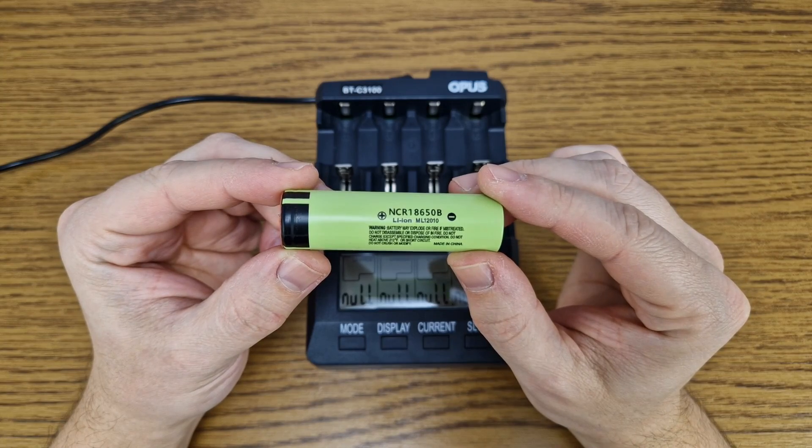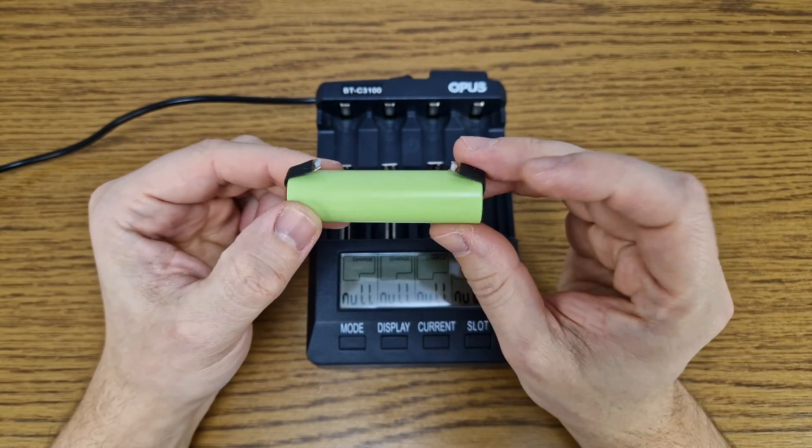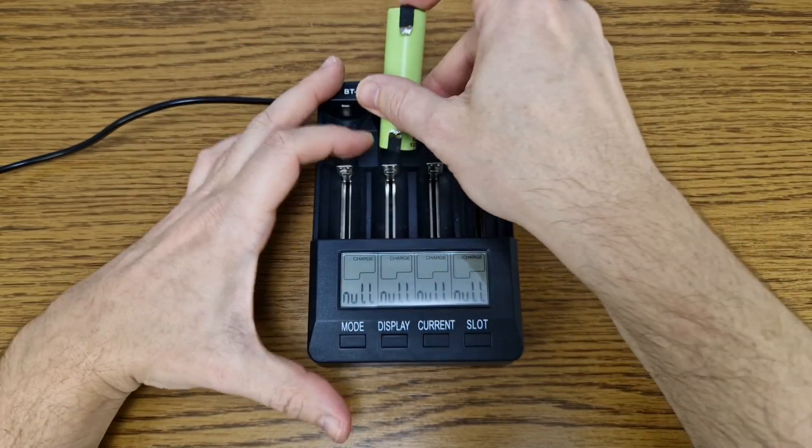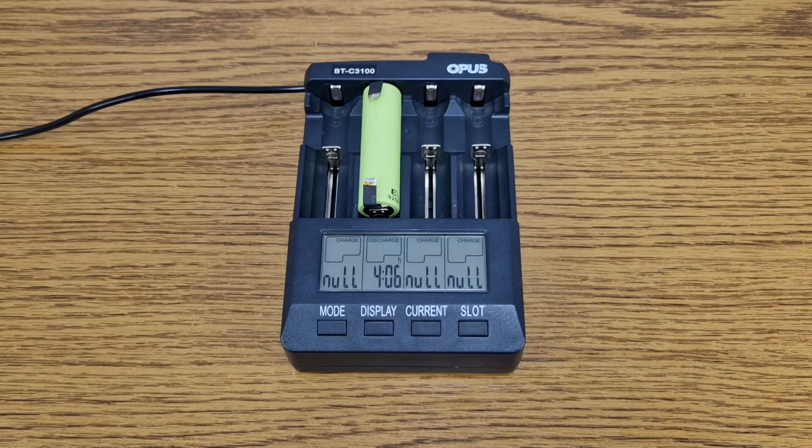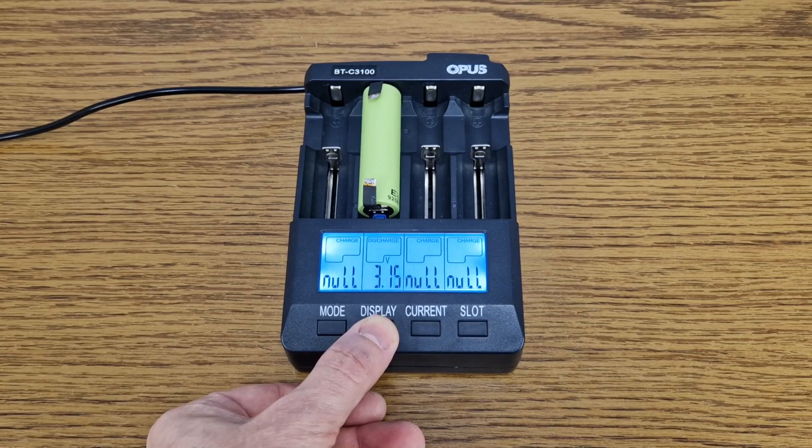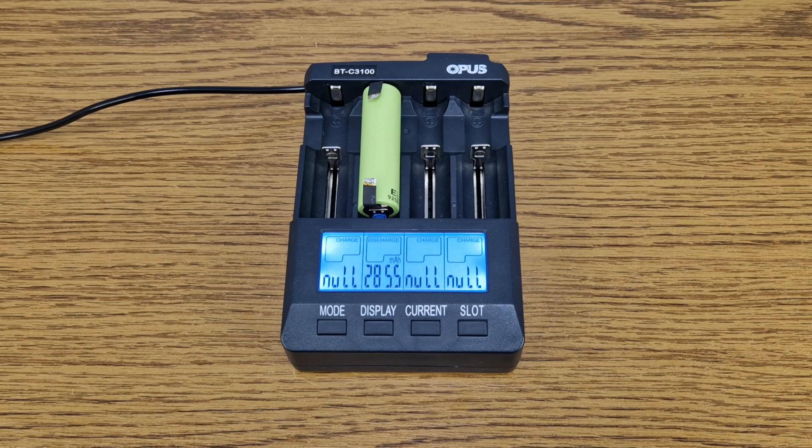This is an old cell. It came with nickel strips already attached, and I used it a lot of times to test different projects. Let's see what capacity it still has. I will test it with my Opus charger, and after a few cycles it has a real capacity of 2.85 amp hours. That's pretty good considering it's an old used cell.